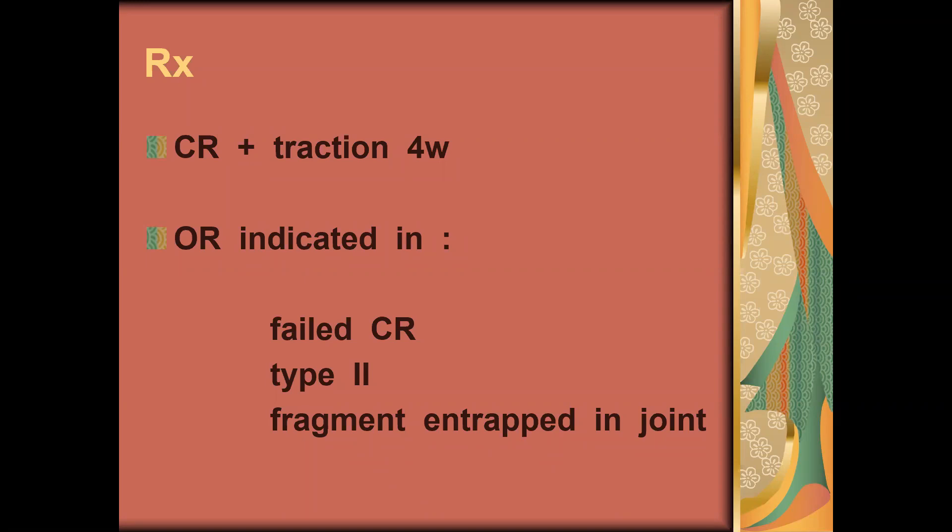The technique of closed reduction for posterior hip dislocation, you can watch on YouTube, there are many videos. Usually we need the patient lying on the floor, better than on the operative bed. We need an assistant to stabilize the pelvis. The person doing the reduction does flexion of the knee and flexion of the hip 90 degrees, then does longitudinal traction with internal or external rotation until there is a characteristic clunk, the sound or sensation we feel when the head of femur is back in position.